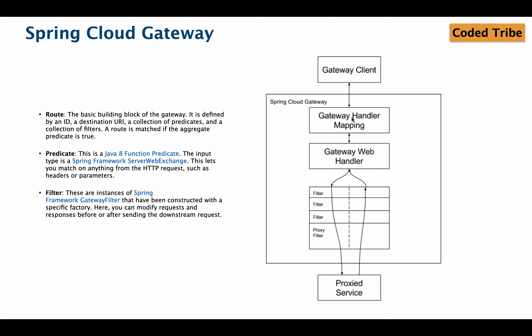Once the target microservice is identified, the gateway looks into the filters for that route. Filters allow pre-processing of the request before sending it to the destination. After filtering, the request is proxied to the microservice. The response comes back to the gateway web handler for any post-processing before the final response is returned to the client.